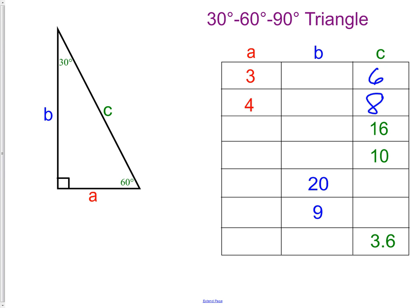Then, looking at the next one, we know the hypotenuse is 16. That makes the short leg half of that, which is 8.